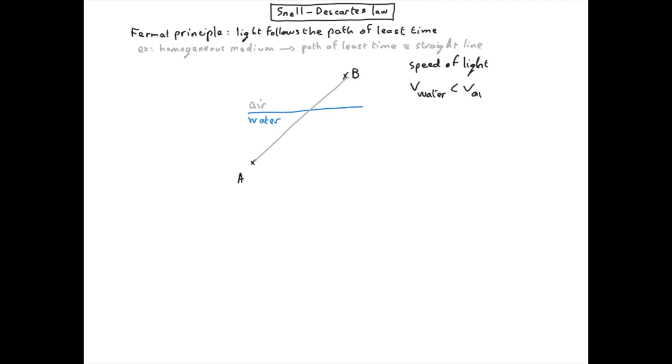Therefore, the path which minimizes the time to go from A to B will try to minimize the time spent in water. So that means the distance in water should be minimum. So for instance, you could imagine that the light will go straight up in order to have spent the least time in water and then go to the point B.